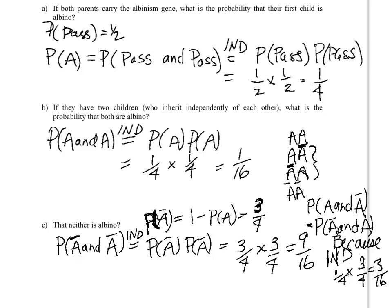So if I was to turn these all into probabilities, the probability of A and A, the probability of A and not A, the probability of not A and not A, this one we figured out is one sixteenth. This one is nine sixteenths, and each of these are going to be three sixteenths for a total of one.